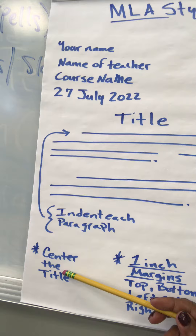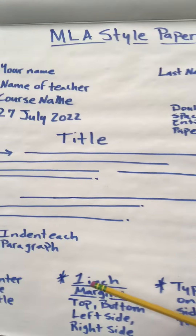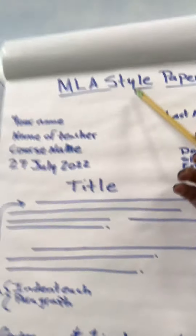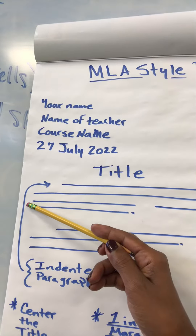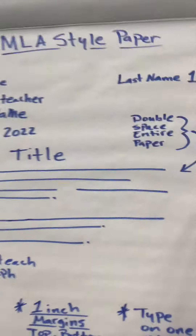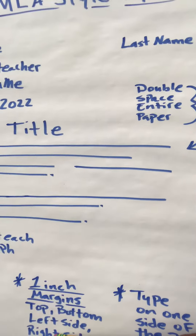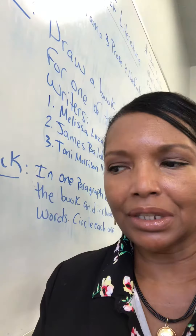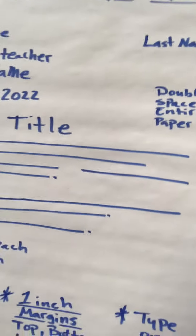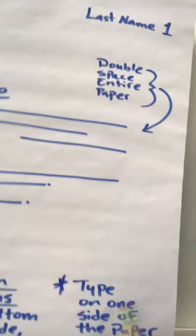The paper should be centered — the title — then the margins. That's from the top, to the left side, to the right side, to the bottom. You'll have one-inch margins. Then once you've done that, make sure that you only type on one side of your paper.